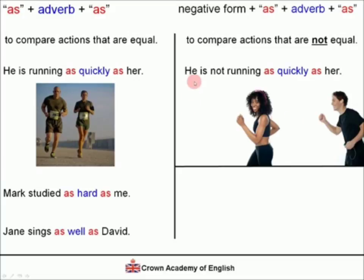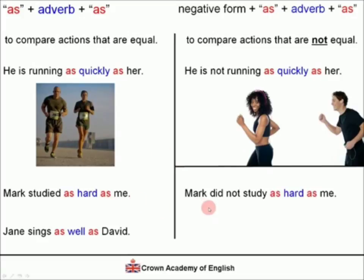Notice what we have done: we take the verb in the present continuous and put it in the negative — 'he is running' becomes 'he is not running', then we add 'as', adverb, 'as'. Mark did not study as hard as me. The verb 'Mark studied' is in the past simple, and its negative is 'Mark did not study as hard as me'.